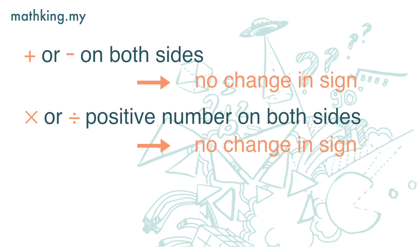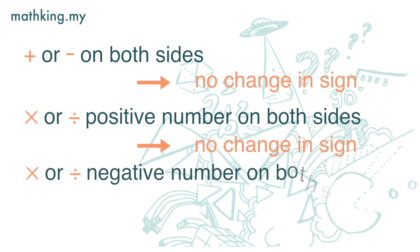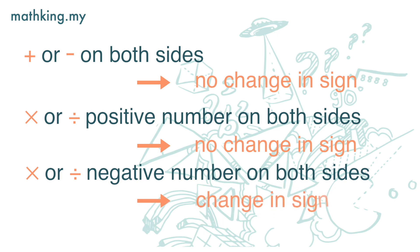However, if we multiply or divide both the left-hand side and the right-hand side by a negative number, we need to reverse the greater than or less than sign.